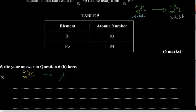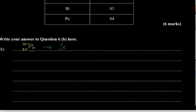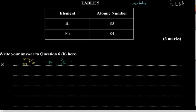When this lead emits a beta particle — a high-speed electron — the atomic number will increase by one. So we get a beta particle plus bismuth (Bi), with atomic number 83, and the mass number remains the same at 210.